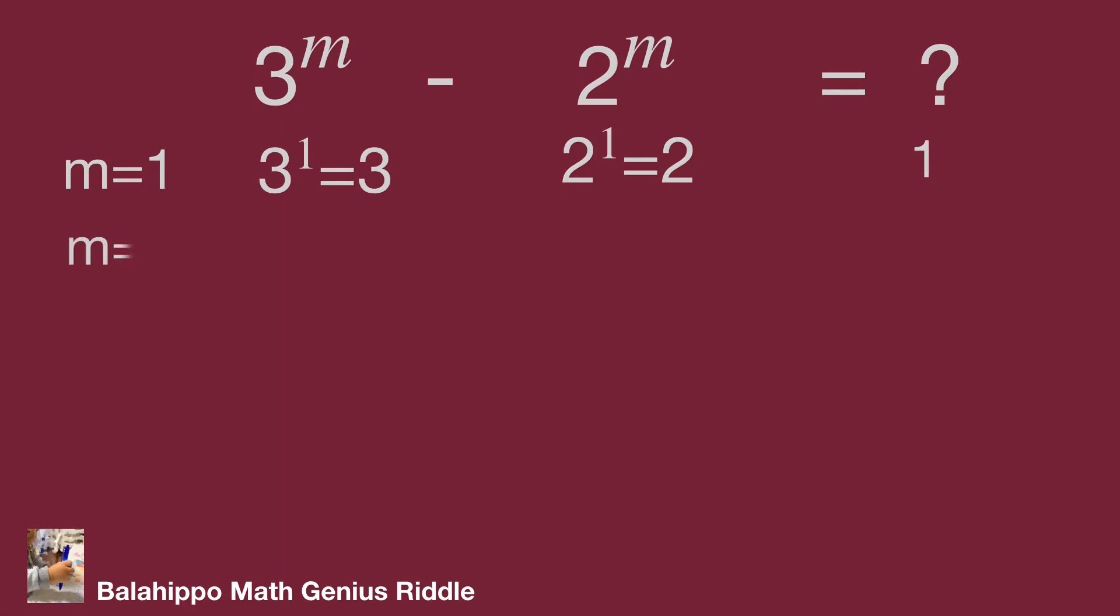m equals 2: 3 squared equals 9, 2 squared equals 4. 9 minus 4 equals 5.